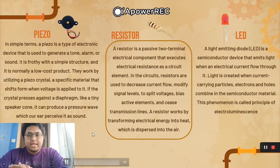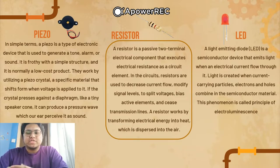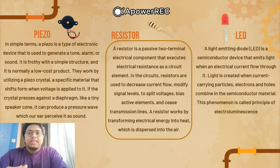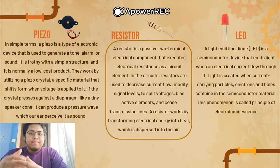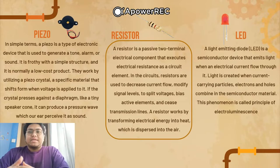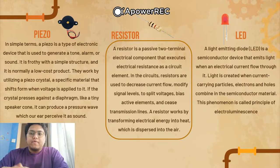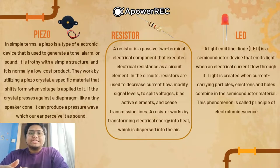Next is the piezo buzzer. A piezo is an electronic device used to generate a tone, alarm, or sound. It has a simple structure and is normally a low-cost product. It works by utilizing a piezo crystal — a material that changes shape when voltage is applied to it. If the crystal presses against a diaphragm like a small speaker cone, it produces a pressure wave perceived as sound. Next is the resistor — a passive two-terminal electrical component that implements electrical resistance as a circuit element, used to decrease current flow, modify signal levels, and divide voltages. A resistor works by transforming electrical energy into heat dispersed into the air.